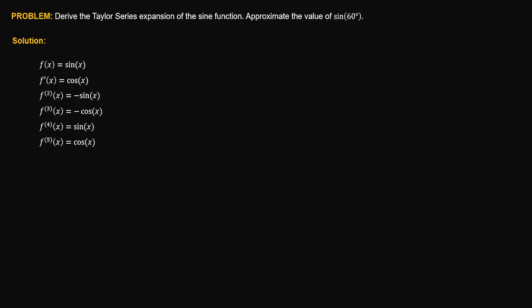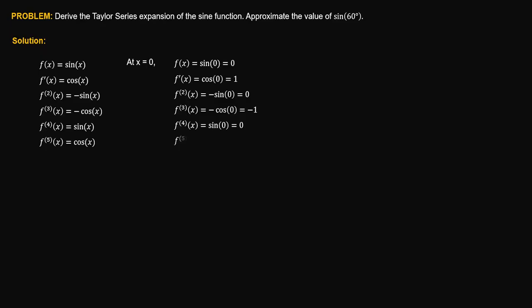For this case, let's say we'll only consider up to fifth order approximation, and let's set the x value to be equal to zero, because we know the value of the sine and cosine function at zero. At x equal to zero, the value of sine of zero is equal to zero. The value of cosine of zero is equal to one. Therefore, the value of negative sine of zero is zero. The value of negative cosine of zero is negative one. Sine of zero is zero, and cosine of zero is equal to one.